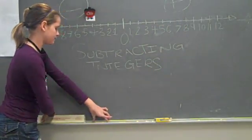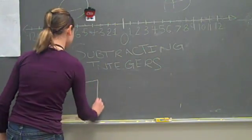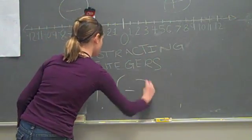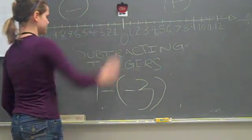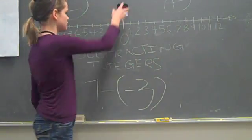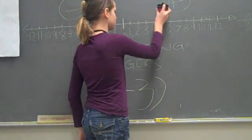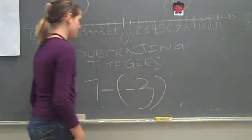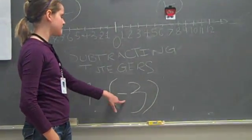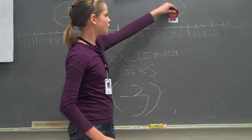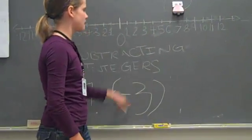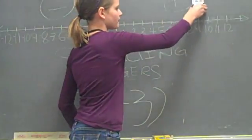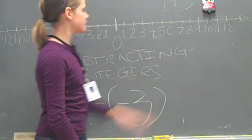Our next equation will be 7 minus negative 3. So we start our car at the origin and go 7 spaces to the right. Then we're subtracting negative 3, so we turn our car around and go backwards 3 spaces. And our answer is 10.